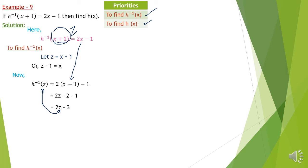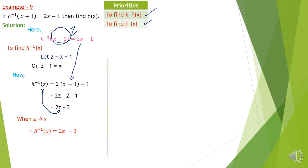Since input variables are dummy variables, we replace z with x: h⁻¹(x) = 2x−3. Now we have found h⁻¹(x). If we find the inverse of h⁻¹(x), we will get h(x), by the same note we have seen previously.